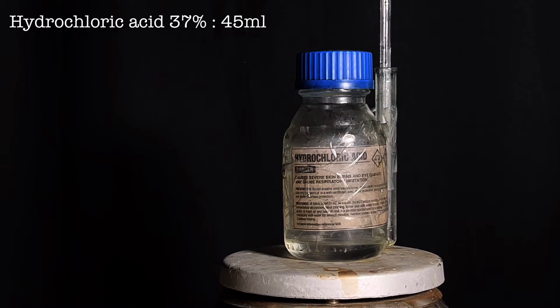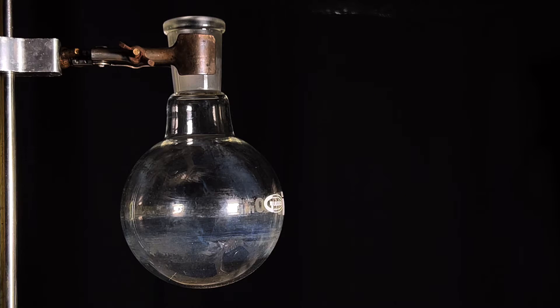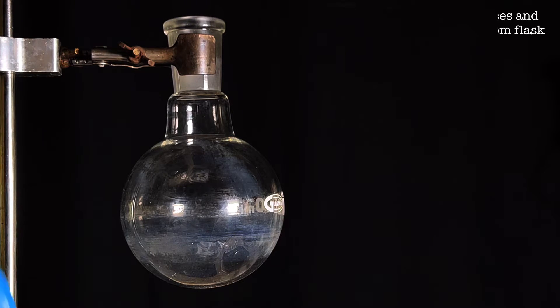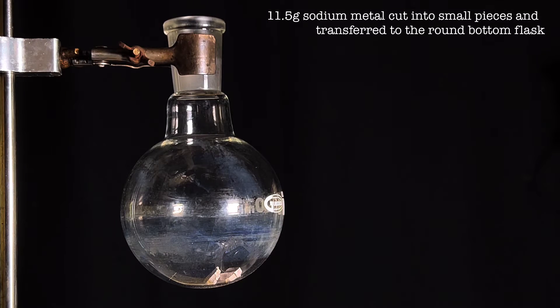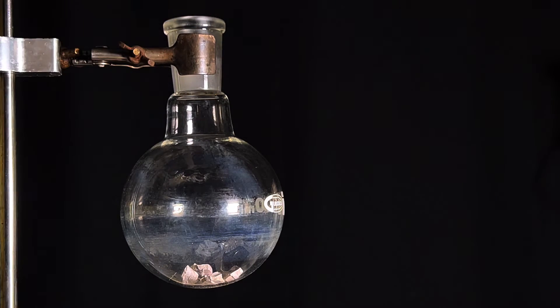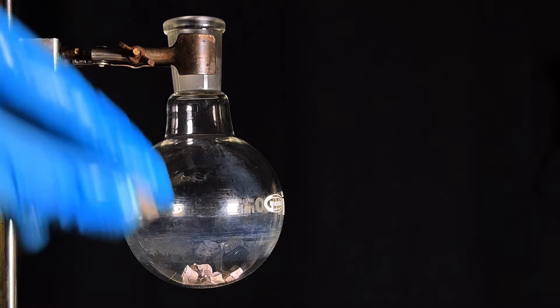A 500 milliliter round bottom flask is fixed onto an iron stand using a clamp. Sodium metal pieces are cleaned and dried from mineral oil, cut into small pieces, and 11.5 grams was transferred to the dry flask.